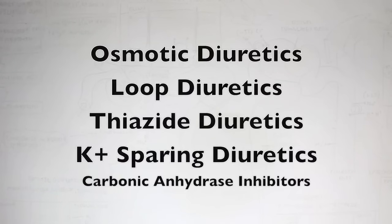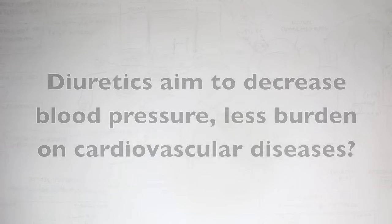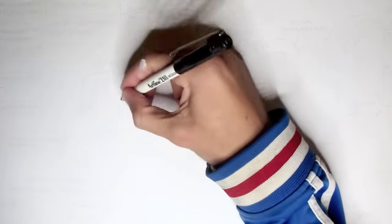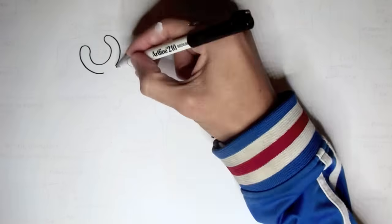In this video, we're going to look at four main types of diuretics and one additional type: osmotic diuretics, loop diuretics, thiazide diuretics, and potassium-sparing diuretics, and also the carbonic anhydrase inhibitors. All these diuretics aim to reduce blood pressure by increasing the excretion of water and sodium in urine.